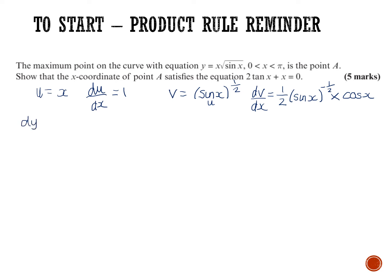Let's state our product rule. It doesn't matter which way round you put the terms, but it's u dv/dx plus v du/dx. Remember this isn't given to you in the formula book, so you do need to remember it. It's easy to remember because you keep one function the same and differentiate the other, then switch it around. Writing the product rule shows that you know the rule you're using.